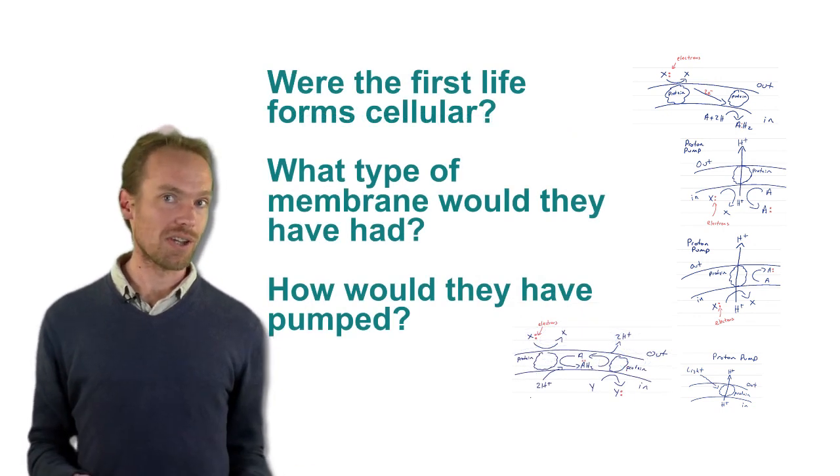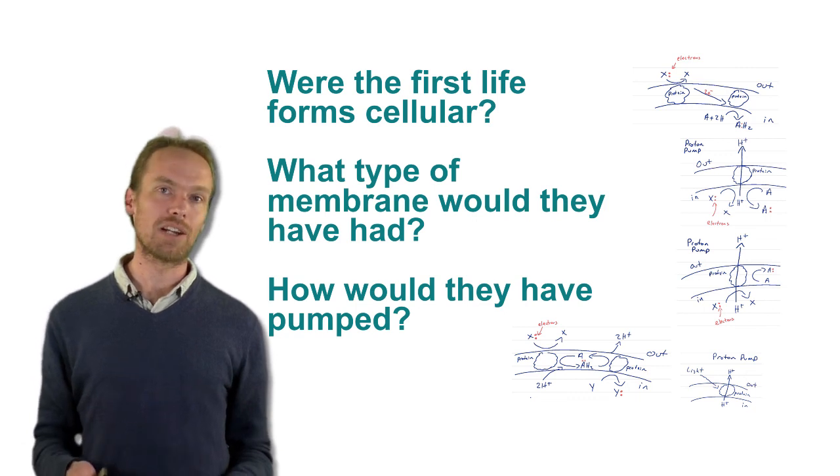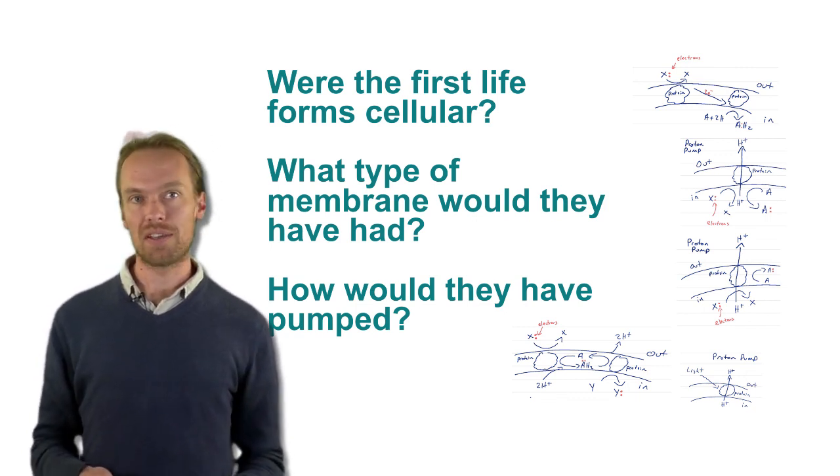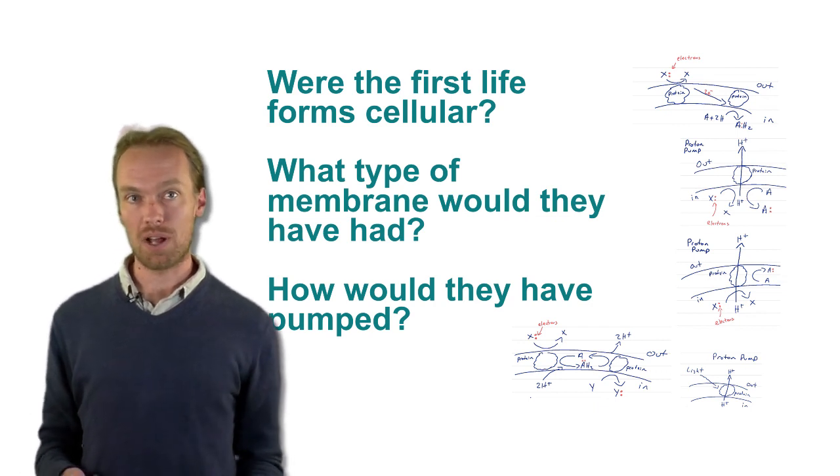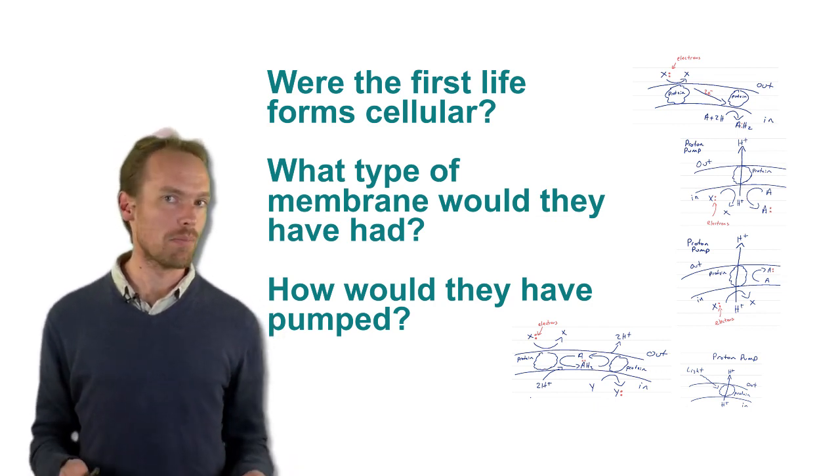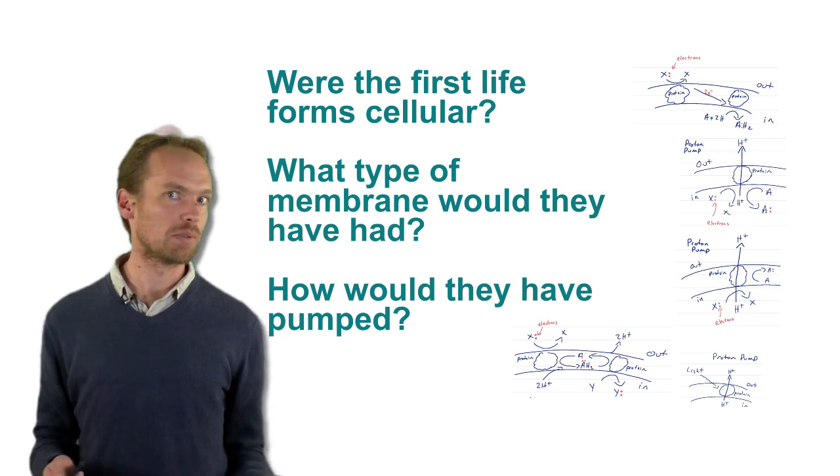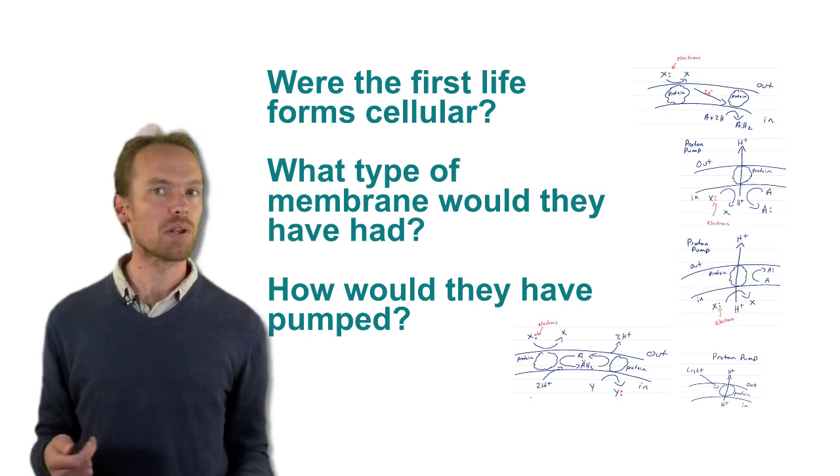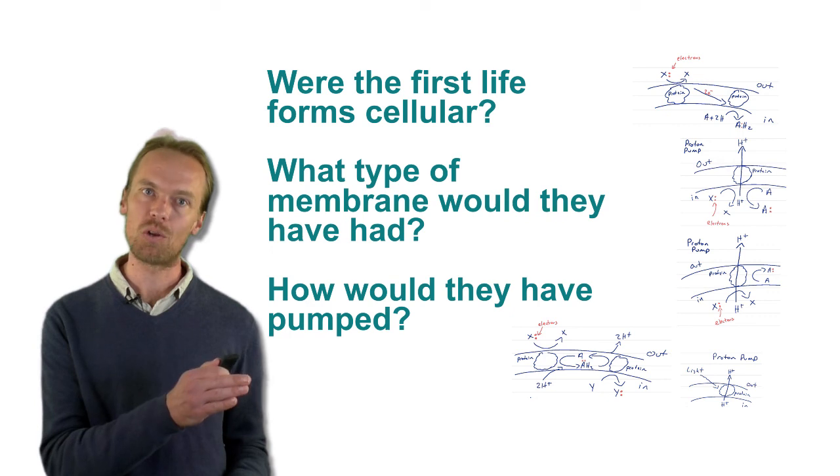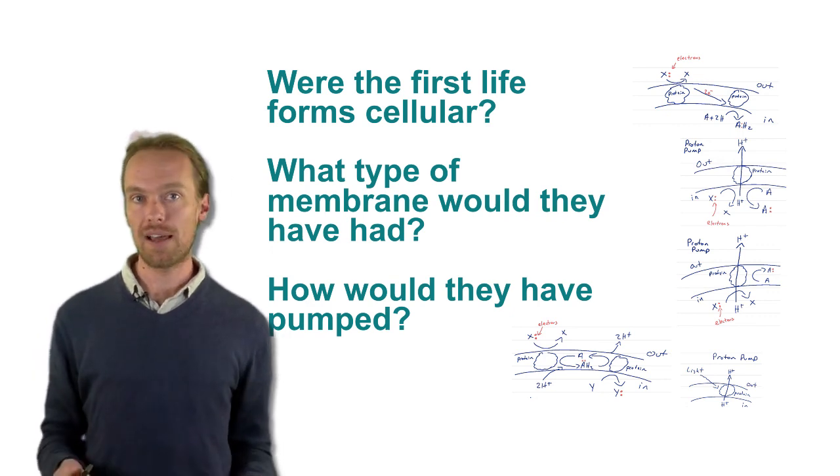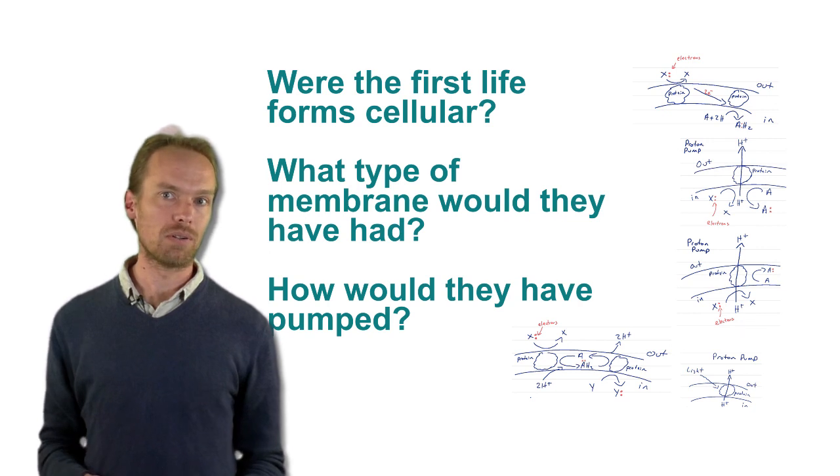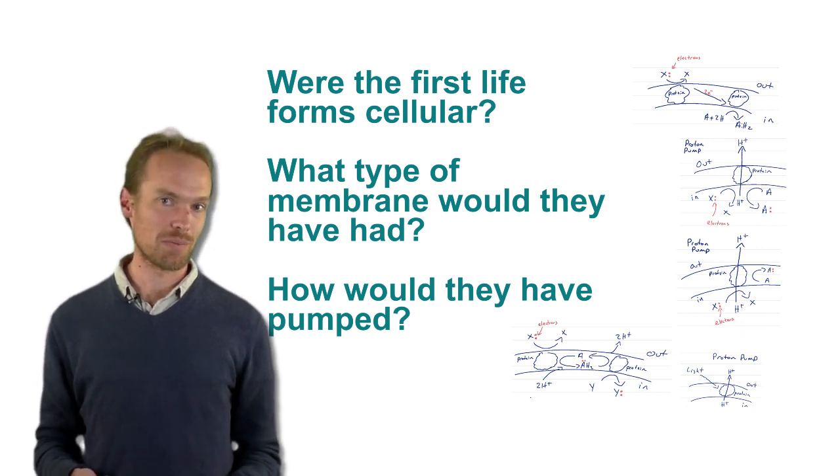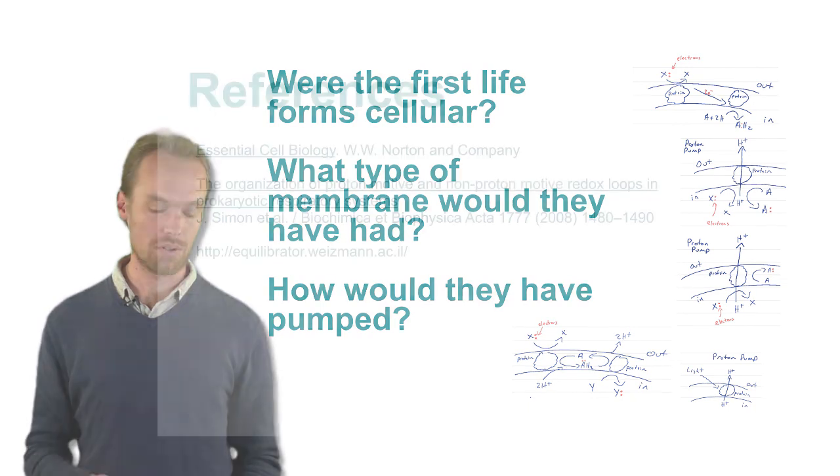We have to ask ourselves, along with that question, were the first forms of life actually cellular, or could they have been acellular? If the first forms of life were not cellular, then all of this talk about membrane bioenergetics becomes very difficult to imagine. Maybe there were other ways of coupling one chemical reaction to another. If they did have a membrane, what type would it be? And again, which type of pump, or loop, or proton consumption pathway, or light absorbing pathway, would have been used?